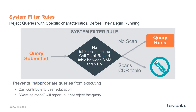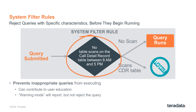The system filter rule is an option that is not widely used because it can be harsh — it's a pass-fail type of rule. Any query entering the system that matches the classification of a filter rule will be rejected and will not be allowed to start running. In this example on this slide, we've got a filter rule that says no table scans on the call detail record table between the hours of 8 in the morning and 5 at night. Any query that attempts to do a full table scan on the CDR table will be rejected — useful if you want to ensure only indexed access or partition elimination type activity happens against a really large table.